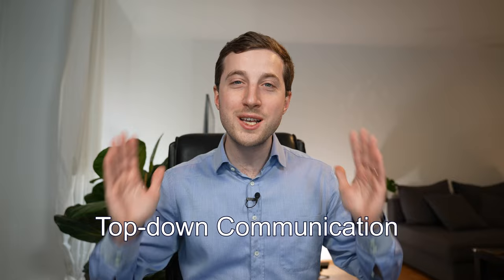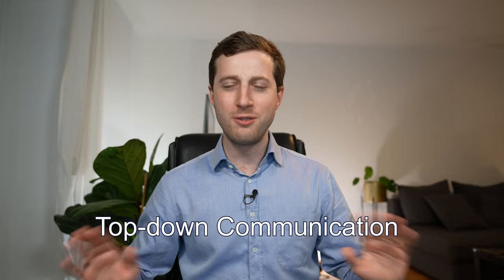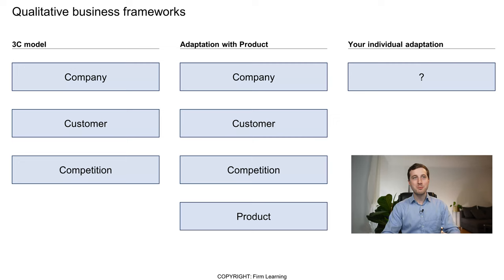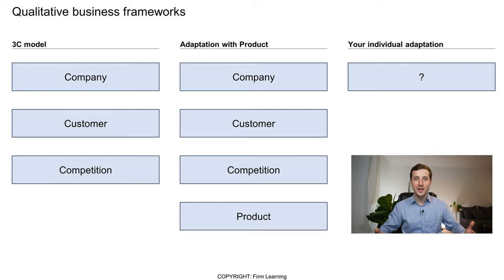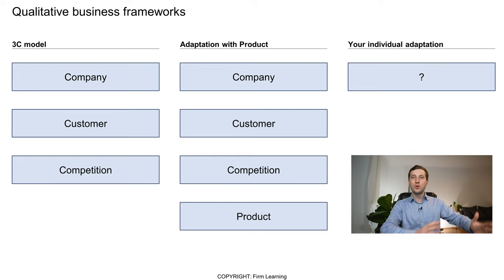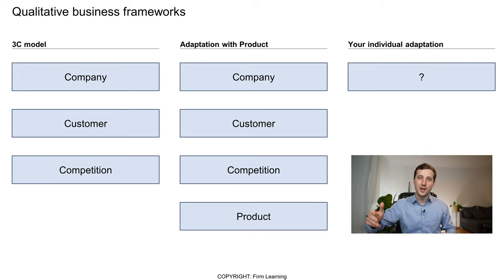How you present your structure is also important. My key advice: present in a top-down way. Always start by presenting the first level, then the second level, then the third level. When presenting your structure, start by saying: I'll look into three things — first, the company; second, the customer; third, competition. Then go into the first bucket, explain its elements one by one. Always keep the pyramid principle in mind. Being well-structured and well-organized is one of the most important skills in consulting, and interviewers look for exactly this in qualitative structuring questions.